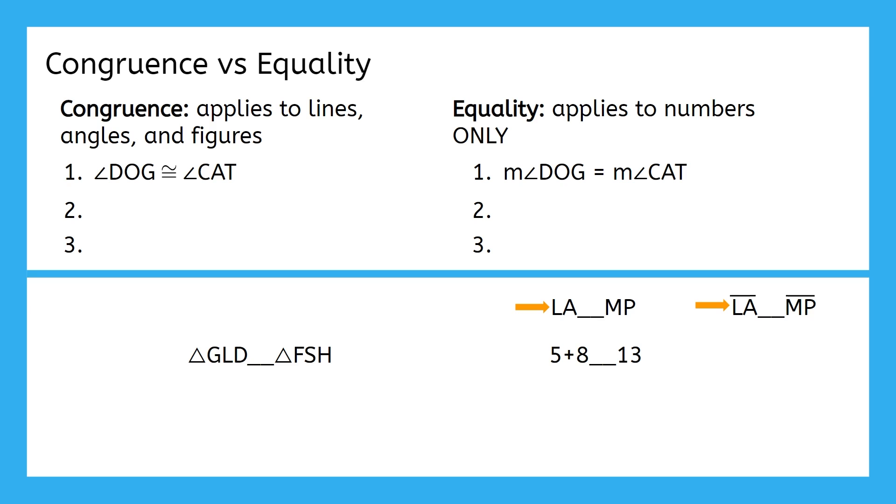When we have segment notation, we need congruence. When there's no segment notation, we would use equality, since we are talking about length, which would be a number. However, two more to go.